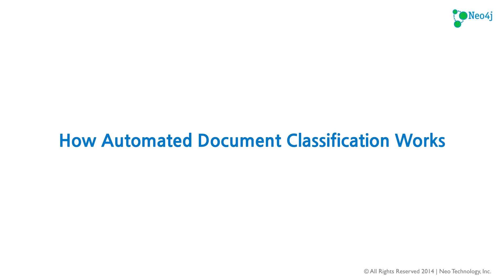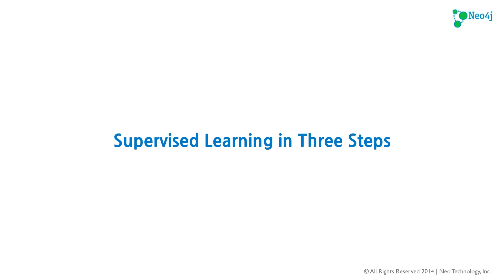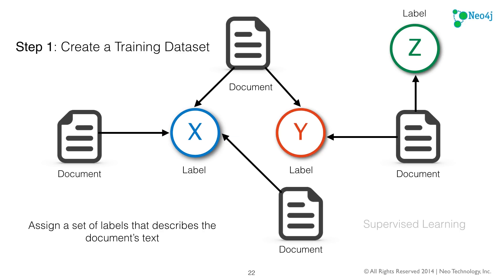Now let's talk about how automated document classification might work. When designing this unmanaged extension, I decided to split the supervised learning phase into three steps. Step one is to create a training data set. We have a set of four documents with text inside them. We assign a set of labels describing the document's text — for instance, a document connected to label X, or another connected to both X and Y. These labels describe the content and are hand-labeled by a human. From there, you train a natural language parsing model that automatically classifies based on the probability distribution of words being next to each other inside each document.